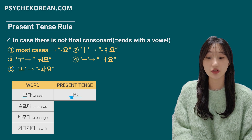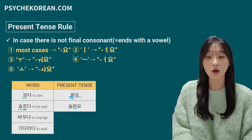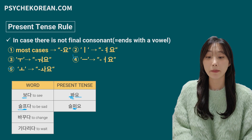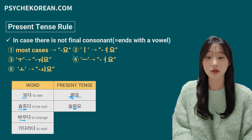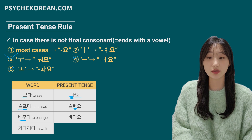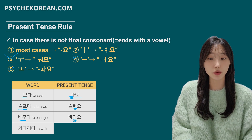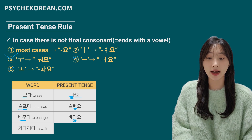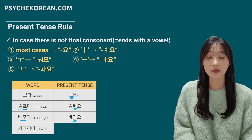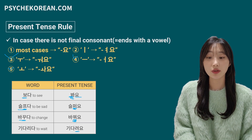슬프다, 'to be sad' — fourth case: 으 changes to 어요, giving 슬퍼요. 바꾸다, 'to change' — third case: 우 changes to 워요, giving 바꿔요. 기다리다 — second case: 이 changes to 여요, giving 기다려요.